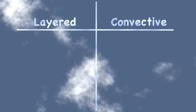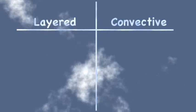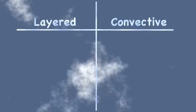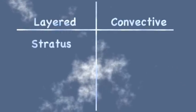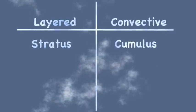Thanks for coming. That was fun! Now let's explore clouds a little more. Clouds can be divided into two general categories: layered and convective. These are named stratus clouds and cumulus clouds.